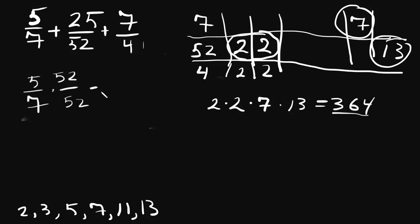So we're going to multiply this one by 52. And that's going to, you're going to want to use your calculator for this, or it's going to take quite a while. That's going to give you 260/364.